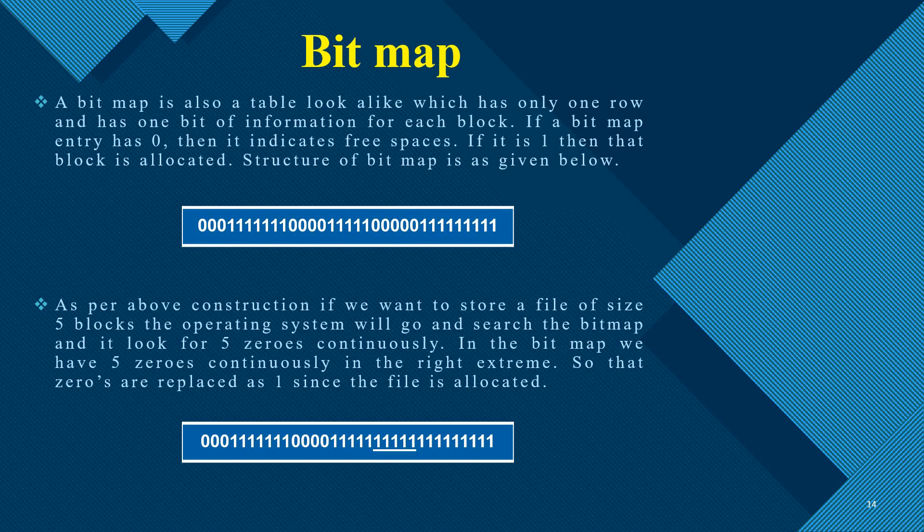The bitmap method supports 0s and 1s — 0 specifies that the data is free, meaning those blocks have free space. If the bitmap value is 1, the block is allocated.